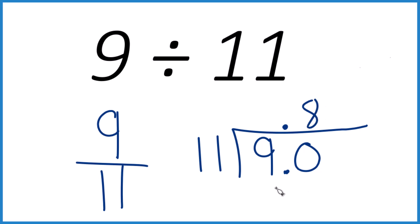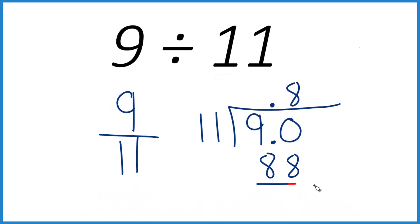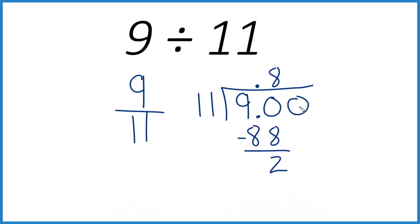So 8 times 11, that's 88, which is pretty close. We subtract, we get 2. 11 doesn't go into 2, but we could call this 9.00. It's still 9. And bring the 0 down. We move over a place.